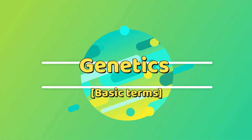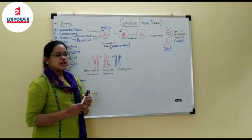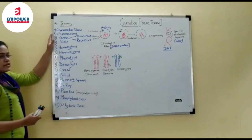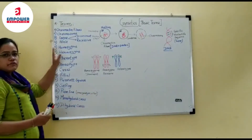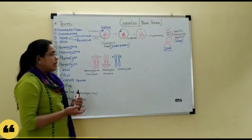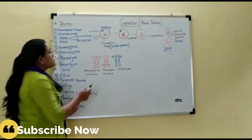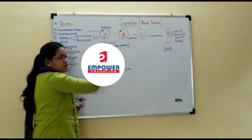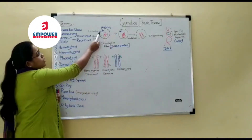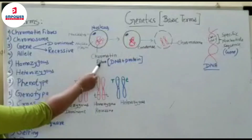Today we are discussing the basic terms of genetics. The terms are as follows — you can see them one by one. As we know that every cell contains a nucleus. This is the diagram for the nucleus. The nucleus contains chromatin, which is made of chromatin fiber and protein fiber.